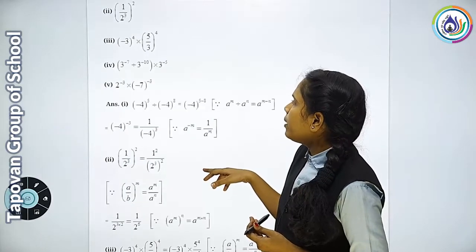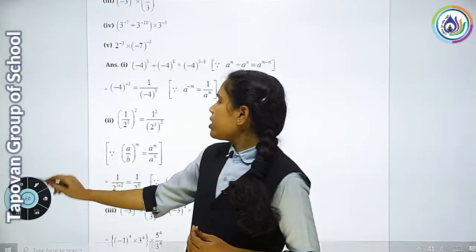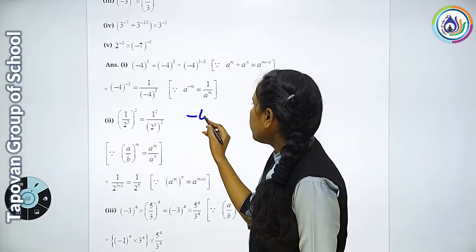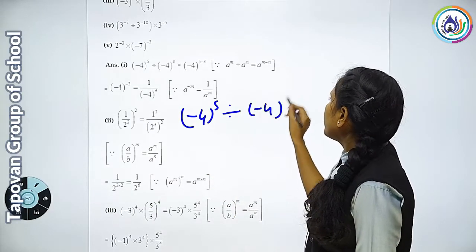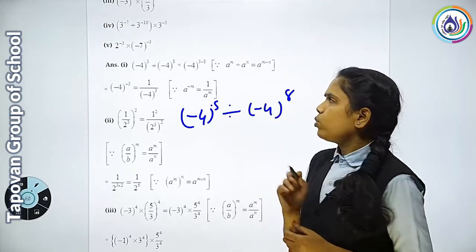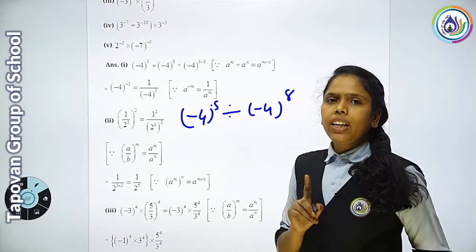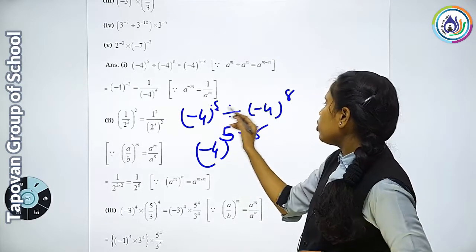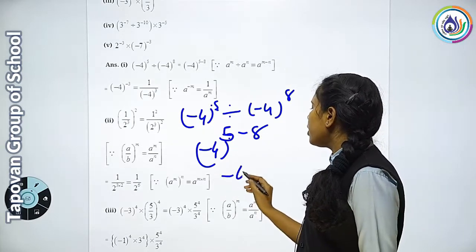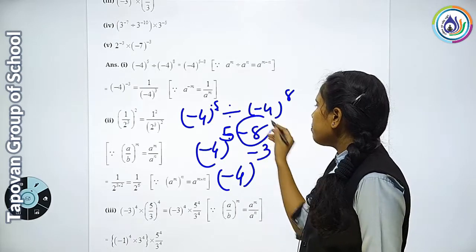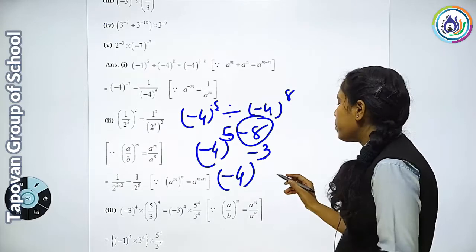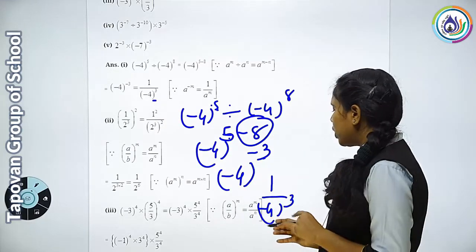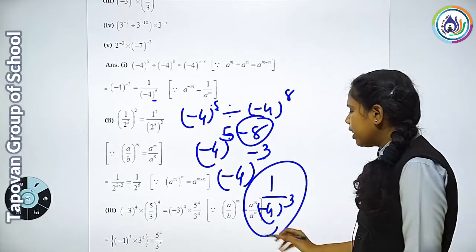To ab ispe divide diya hua hai. Divide kaise karna hai? To first: minus 4 raise to 5 divide by minus 4 raise to 8. Donho power plus nahi hai, to kuch niche lese jane ki zaroorat nahi. Lekin jab divide hota hai na, to hame minus karna hai — yaani minus 4 ki power ko ek doosre se minus kar do. Yaani 5 ko minus karayenge 8 mein se — 5 mein se 8 gaya to kitne bache? Minus 3. Kiki 8 ki sign minus hai. So minus 3. Ab ye minus 3, to hame isko niche le jane ge — 1 upon minus 4 raise to 3. Done.